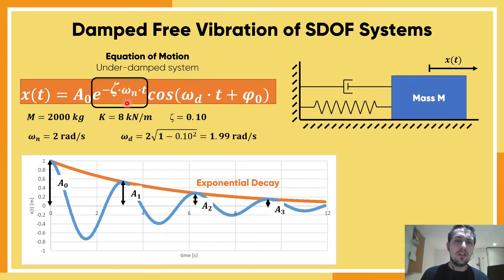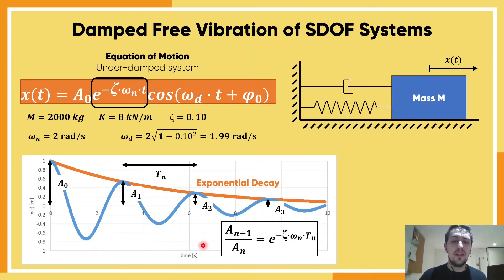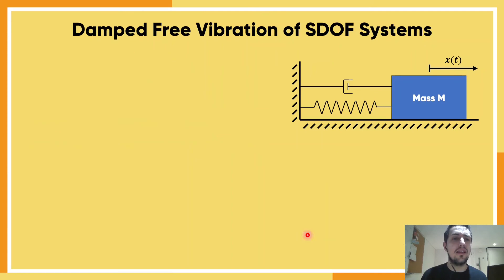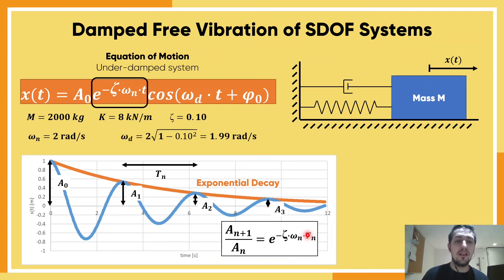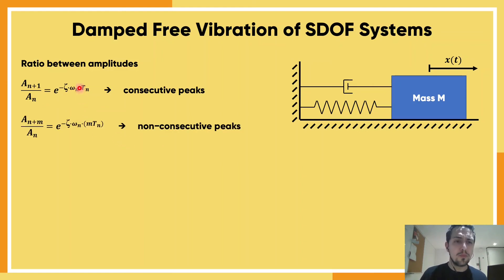We just found out that the exponential decay gives you the change in amplitudes of your motion. If we take time equal to a full period — substituting the natural period of your structure — we get a useful equation: the ratio between successive amplitudes a1 and a0 is given by the exponential decay evaluated at t equals the natural period. This is also valid between a2 and a1, or a3 and a2. For non-consecutive peaks, we multiply the period by the number of periods in between those peaks.